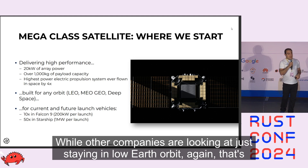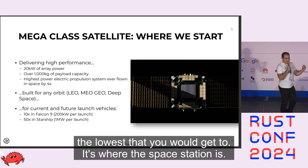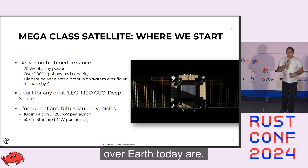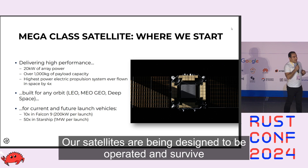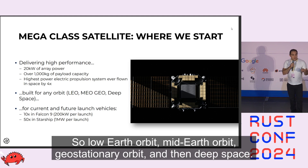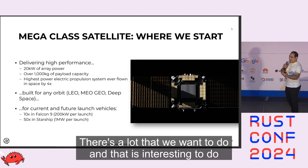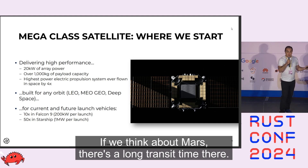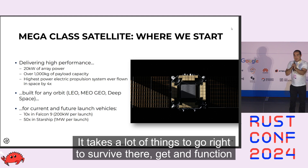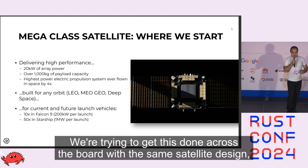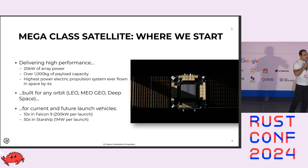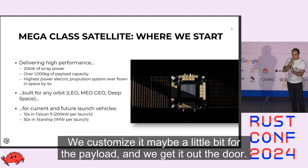While other companies are looking at staying in low Earth orbit — where the space station is, where most satellites in orbit over Earth are today — our satellites are being designed to operate and survive in any orbital profile: low-Earth orbit, mid-Earth orbit, geostationary orbit, and deep space. There's a lot that's interesting to do that is not around Earth. Mars has a long transit time and takes a lot of things to go right, and we're trying to get this done with the same satellite design — not a new bespoke satellite for every mission.